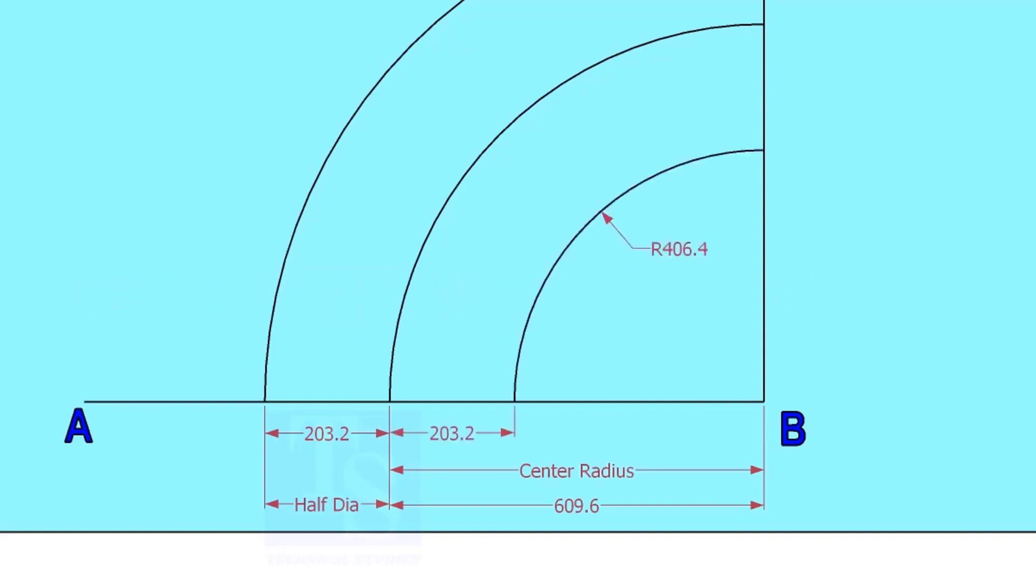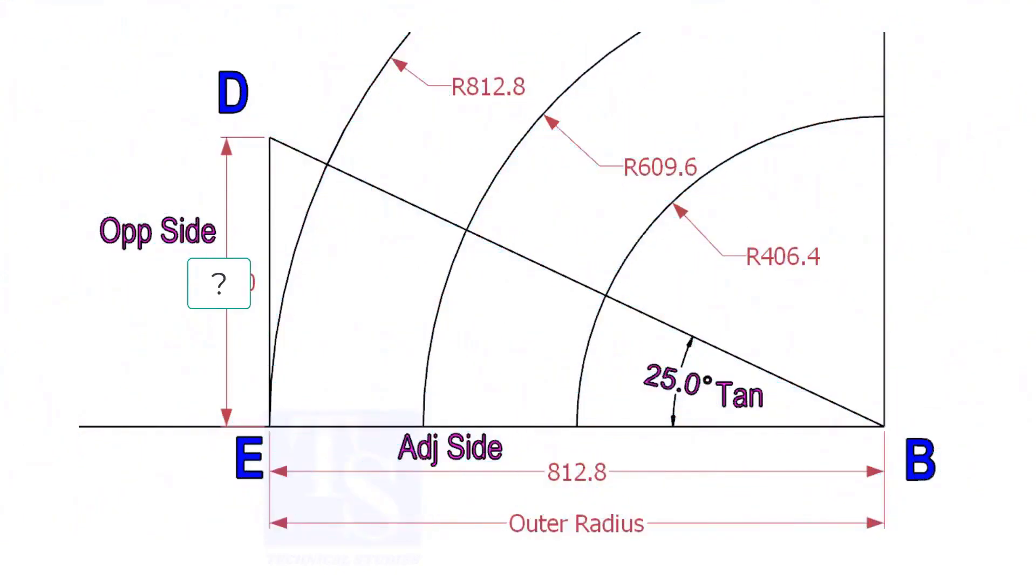Mark the half OD arcs on both sides of the center line. Mark a line 25-degree rotated from the base line AB.